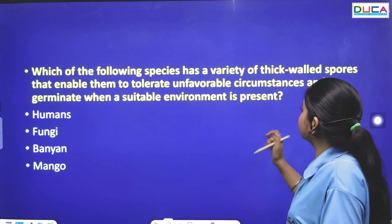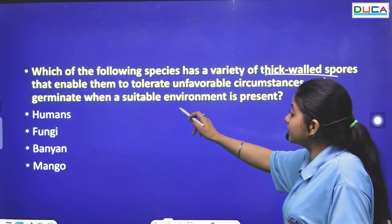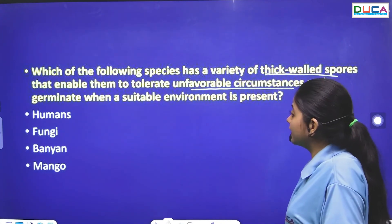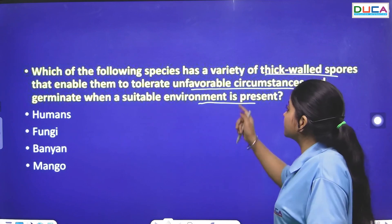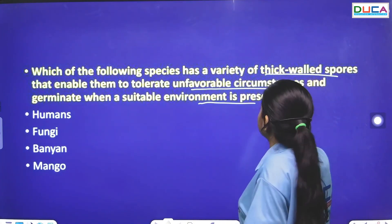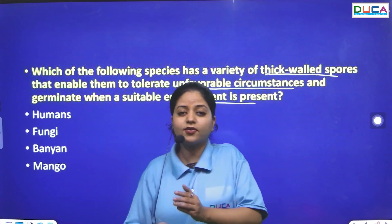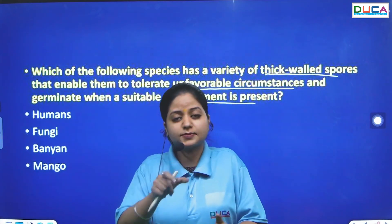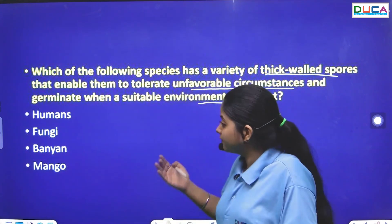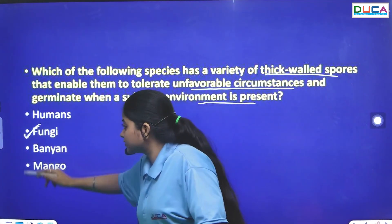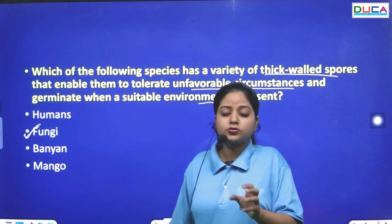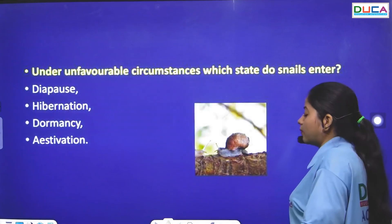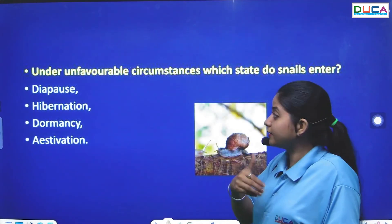The next question: Which species has thick-walled spores that enable them to tolerate unfavorable circumstances and germinate when a suitable environment is present? The answer is fungi. Fungi develop thick-walled spores under unfavorable conditions, and when conditions normalize, the wall thins and they germinate.